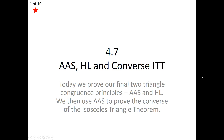Hello, this is Mr. Gumbler with the 4.7, the AAS, HL, and Converse ITT lesson. Today we're going to look at adding our last two triangle congruence principles. These are shortcuts to congruence. And we're going to go back and prove the Converse ITT again. Now, I know we've already seen the proof of this, but now because of our last shortcuts to congruence, we will be able to prove Converse ITT much easier.